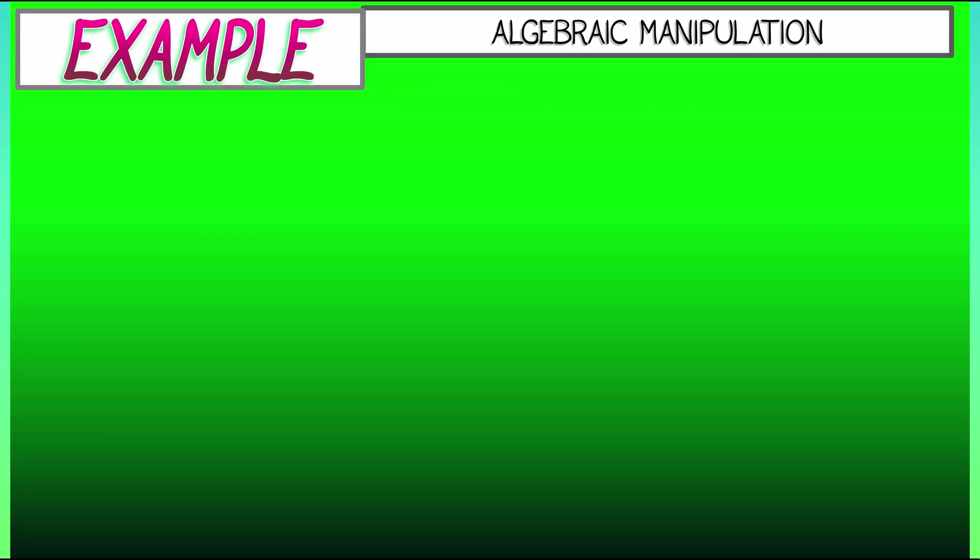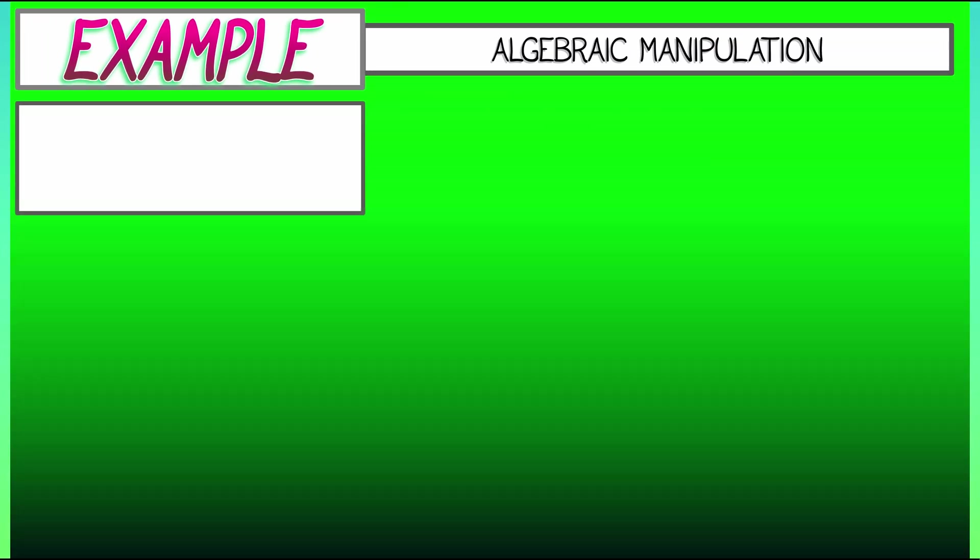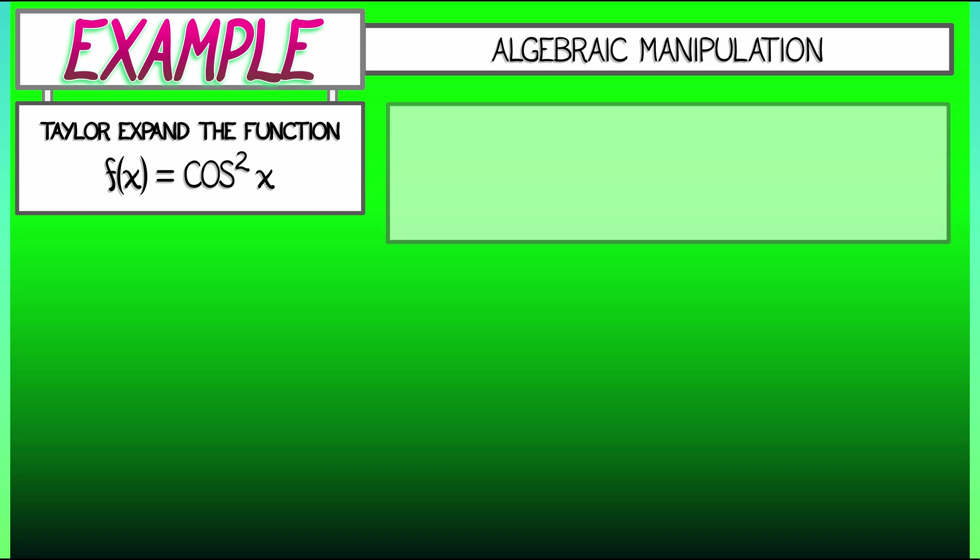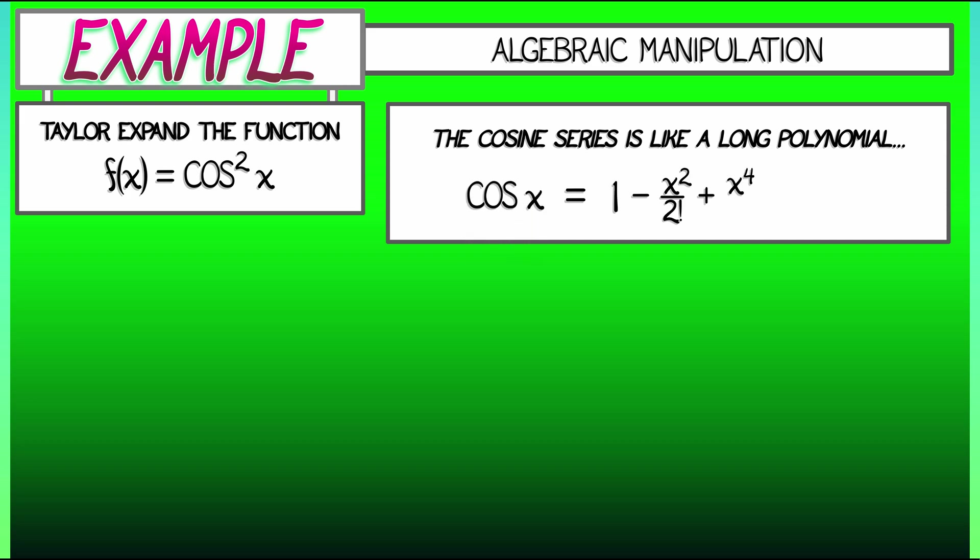Here's an example. Taylor expand the function f(x) equals cosine squared of x. What are we going to do? Well, the cosine series is kind of like a long polynomial. We know that cosine of x is 1 minus x squared over 2 factorial plus x to the fourth over 4 factorial, et cetera.